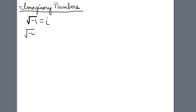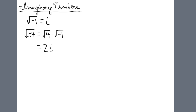If we have the square root of negative 4, we can break this down into two parts: the square root of 4 times the square root of negative 1. The square root of 4 is 2, and the square root of negative 1 is i. So the square root of negative 4 is 2i.